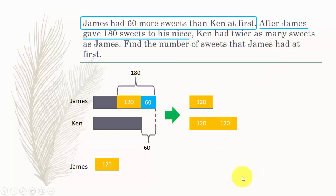So James, the number of sweets James had at first would be 120, that is what's here, plus another 120 from here, plus another 60 from here. So totally, James had 300 sweets at first.